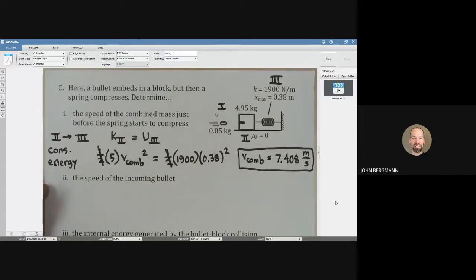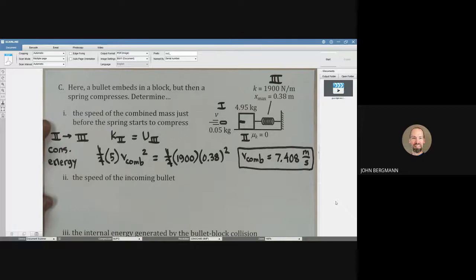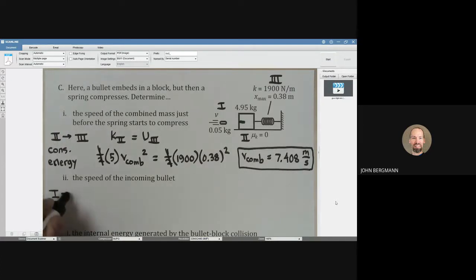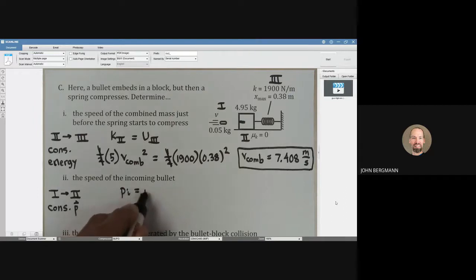So now we're going to find the speed of the incoming bullet. So now we're going to go from one to two, the bullet by itself to when the bullet has slammed into the block, and we are going to conserve momentum. That is, the initial momentum that the bullet has needs to equal the final momentum that the block slash bullet together have.